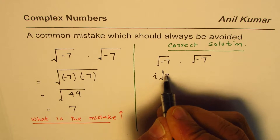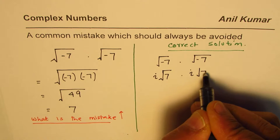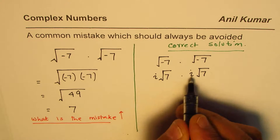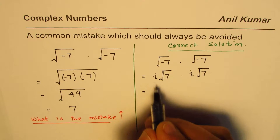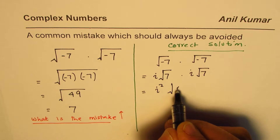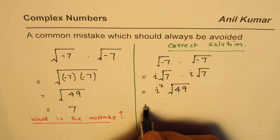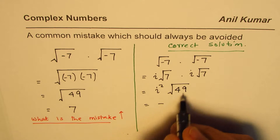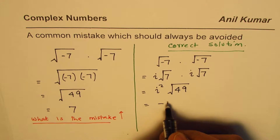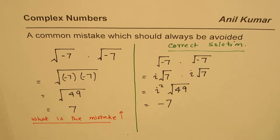So it can be written as square root of 7 times i, times square root of 7 times i. When you multiply these two, you get i squared times square root of 49. Since i squared is negative one and square root of 49 is 7, you get minus 7 as your result — not 7.